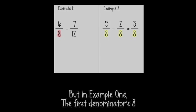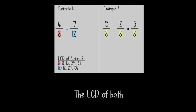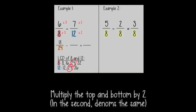But in example 1, the first denominator's 8, and the second — well, the LCD of both is 24. So multiply the top by 3 in the first fraction, and multiply the top by 2 in the second denominator.